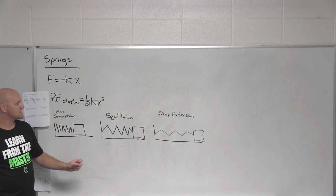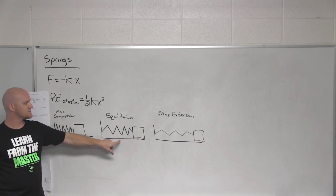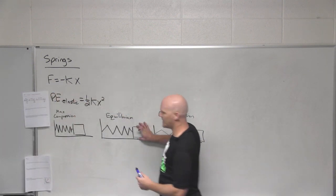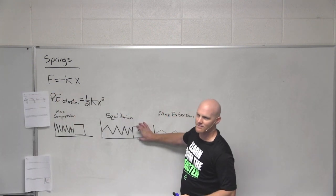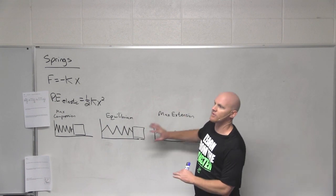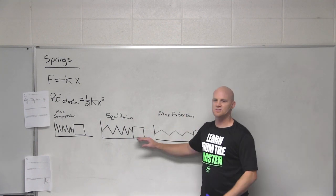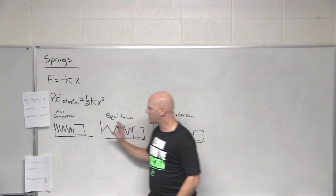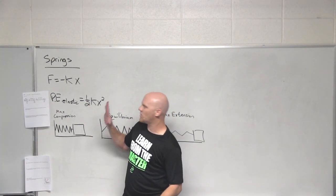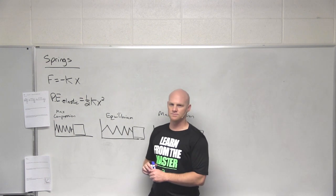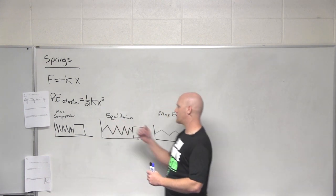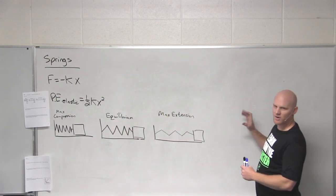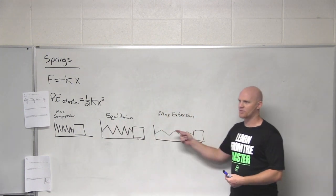If you look at the equilibrium position, it's the position of a spring where if I was holding a spring and let it go, it doesn't go anywhere — it just sits right there. Whereas if I compress a spring and let it go, it's going to go the opposite direction. If I extend a spring and let it go, it's going to snap back the other way.